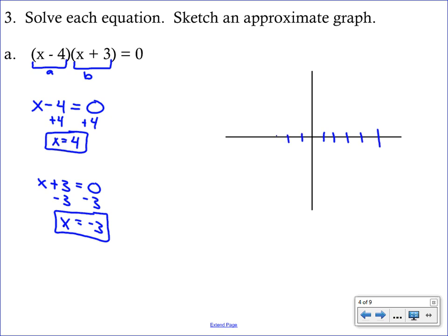Just draw a little sketch — it doesn't have to be perfect. We're looking for a U-shaped graph because there are two factors, two X's, so a degree of two. Mark your solutions at (4, 0) and (−3, 0) — those are the X intercepts and they determine the shape of the graph. Just draw a U-shaped graph that passes through those zeros. We're in the early stages of graphing, but we want to make sure you know why we're solving: we're trying to find those X intercepts.